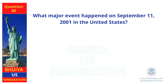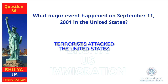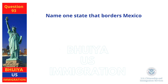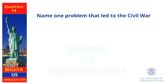What major event happened on September 11, 2001 in the United States? Terrorists attacked the United States. Name one state that borders Mexico. California. Name one problem that led to the Civil War. Slavery.